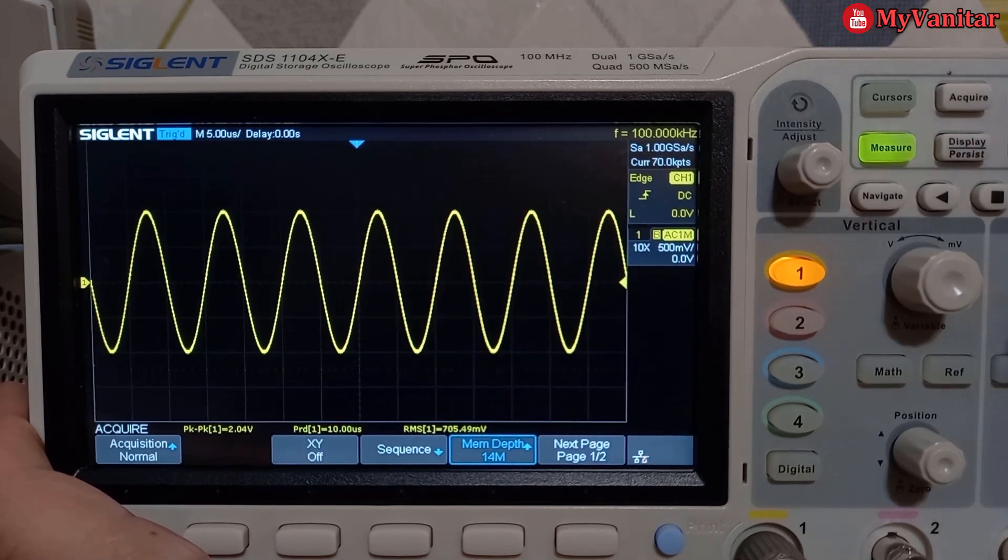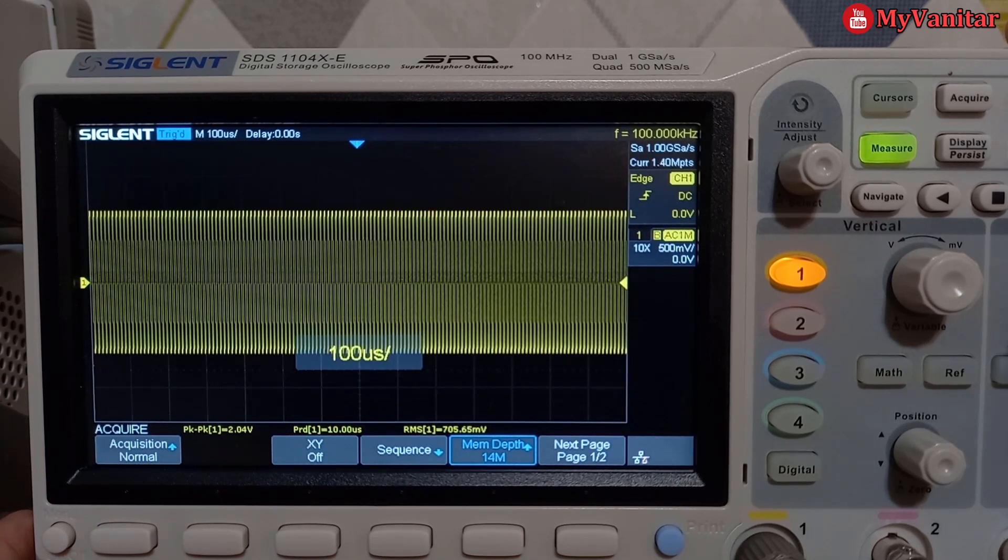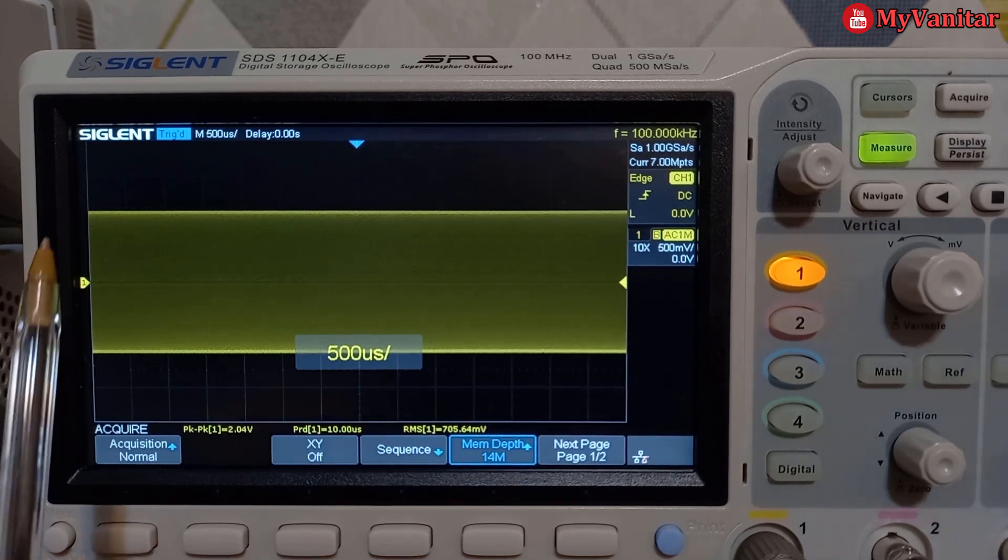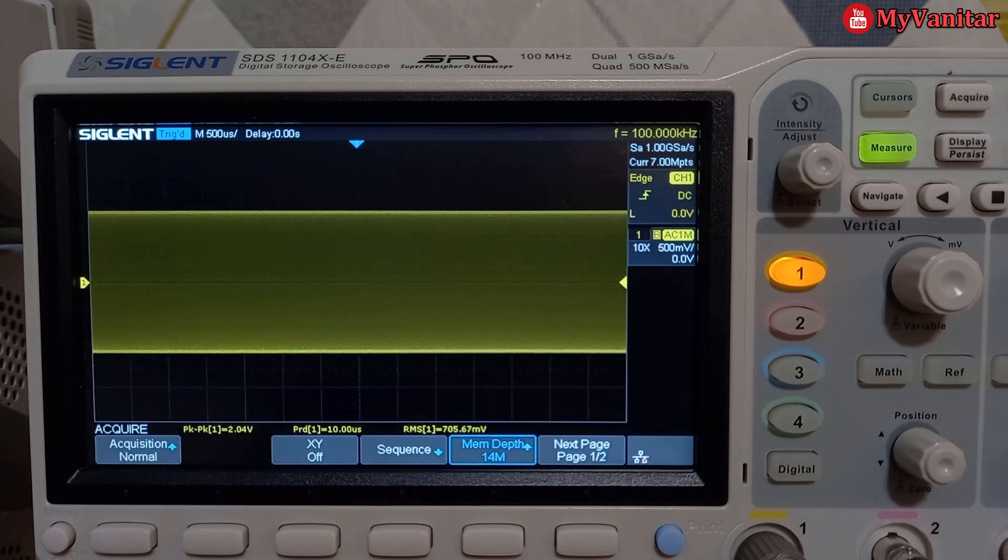Then play with the time division knob for the signal to look like this. Do you see? We just see a straight line at the top and bottom, no rising or falling edges of the signals.